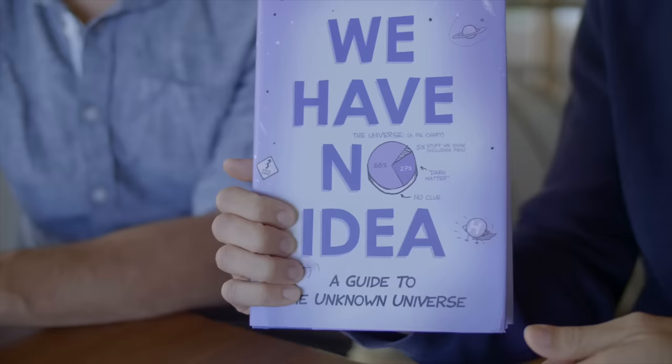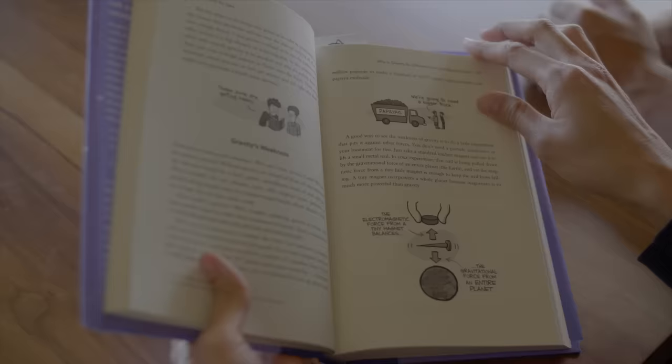Yeah, it's called We Have No Idea. It's a book I wrote with physicist Daniel Whiteson, and it's about all the things we don't know about the universe. All of the big things, like dark matter and dark energy, but also all the little things, like what are all those fundamental particles for? And it has cartoons in it.